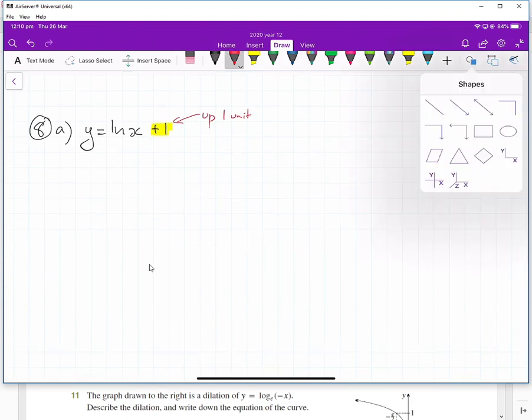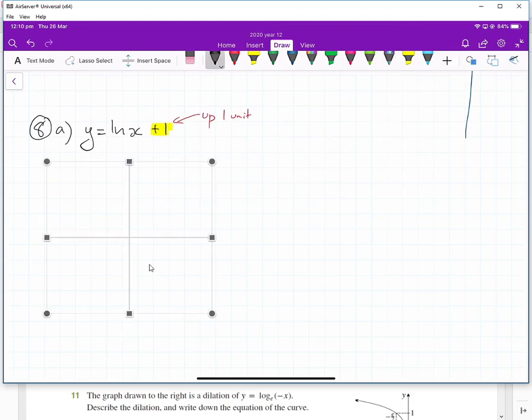So we would have our graph, and then normally a normal logarithmic function would go like this and go through the coordinate that's 1 across on our x-axis. However, this graph has all been moved up one place. So that means this whole thing is going to shift up, and instead, I'll do it in blue. It's going to be a graph that's one unit above what the current one's at.